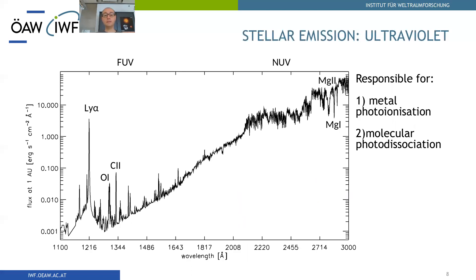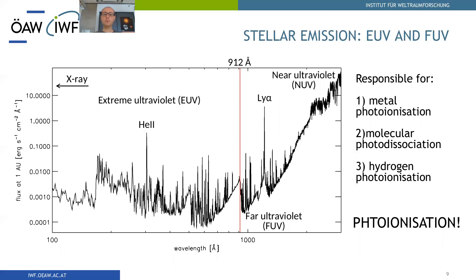In the far UV and near UV, the far ultraviolet is strongly dominated by the Lyman alpha line, and the key lines in the near ultraviolet are the magnesium II H and K resonance lines and the strong magnesium I resonance line. This part of the spectrum, when it hits a planetary atmosphere, is responsible for metal photo-ionization and molecular photo-dissociation. If we move to shorter wavelengths below 912 Ångström — which corresponds to the hydrogen ionization energy — we enter the XUV regime, which is responsible for metal photo-ionization and molecular photo-dissociation, but also for hydrogen photo-ionization, which is extremely important for driving atmospheric escape.